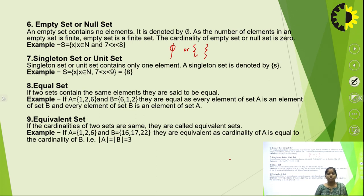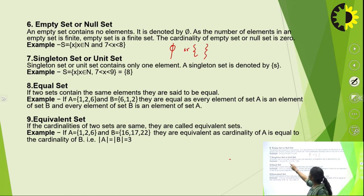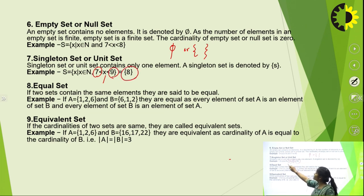The unit set or singleton set is a set containing only one element. For example, if X = {x | 7 < x < 9, x ∈ N}, this contains only 8. Since there is only one element, this set is known as a unit set or singleton set.